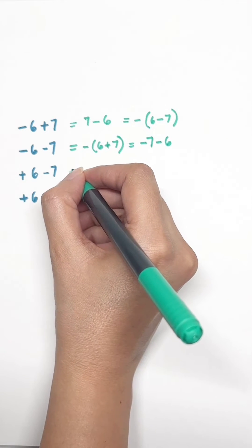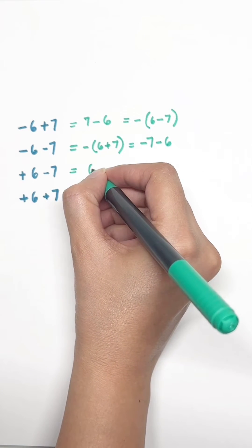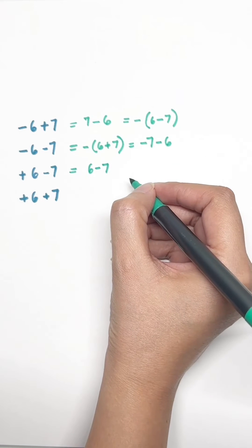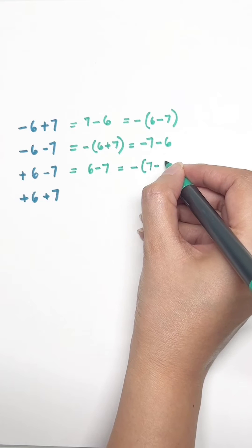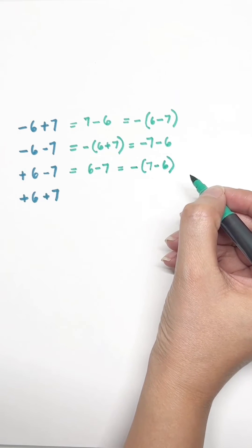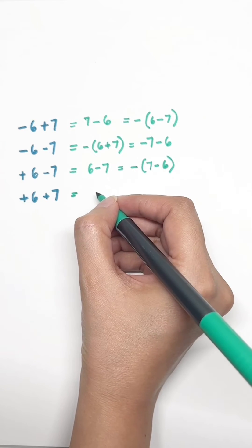The next one: +6 - 7. You can write this as 6 - 7 or -7 + 6. Same thing. Brackets outside, put a minus sign: -(7 - 6). Change the signs inside.